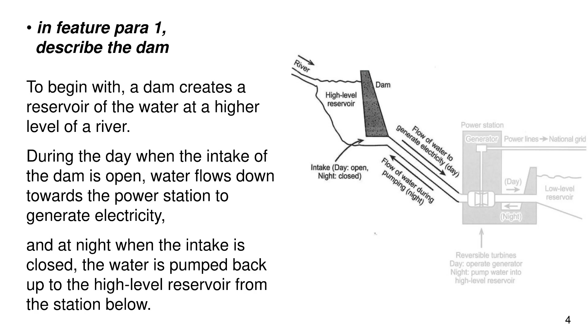During the day when the intake of the dam is open, water flows down towards the power station to generate electricity. And at night when the intake is closed, the water is pumped back up to the high level reservoir from the station below.